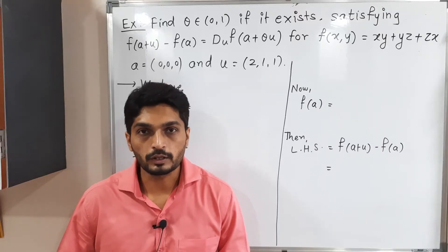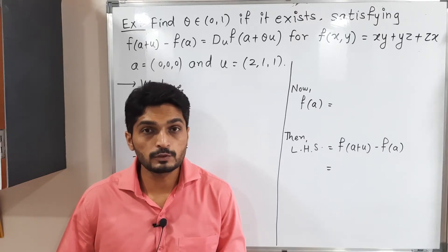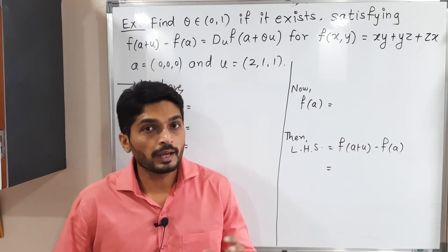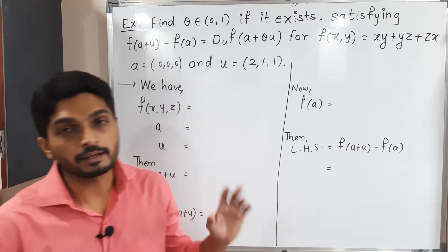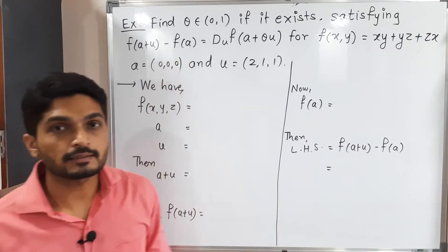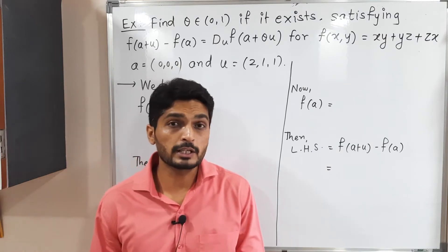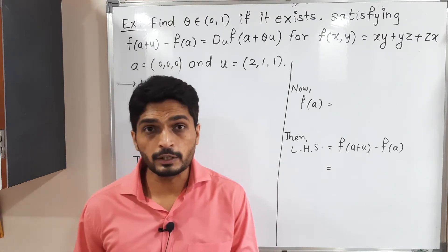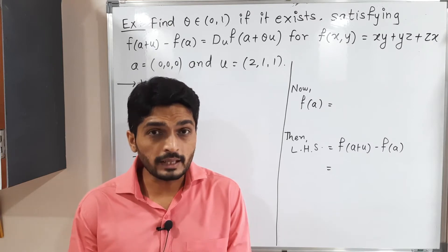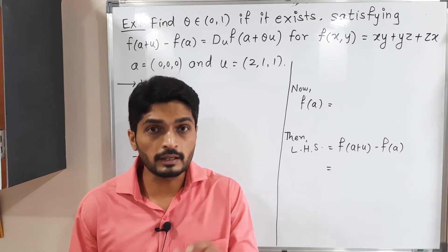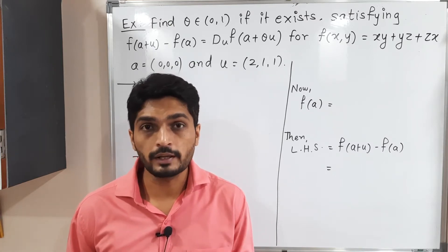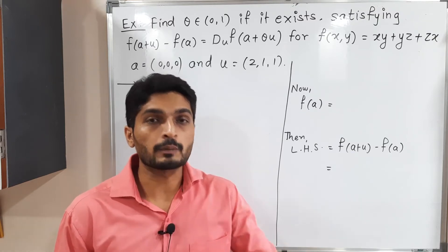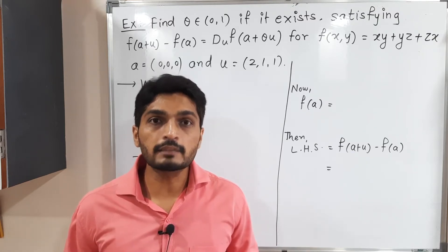Let's solve this example based on the Mean Value Theorem for a scalar field. We have the equality: f(a + u) - f(a) equals the directional derivative of f at a + θu in the direction of u, where θ is a real number lying between 0 and 1. We have to find the value of θ for this equality.